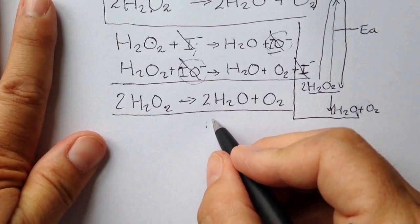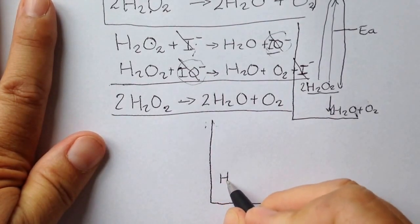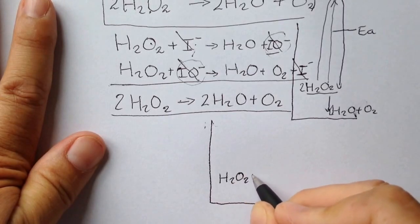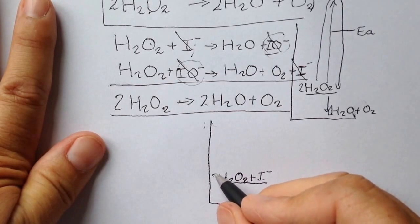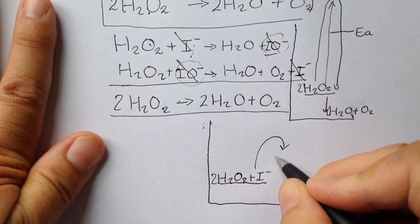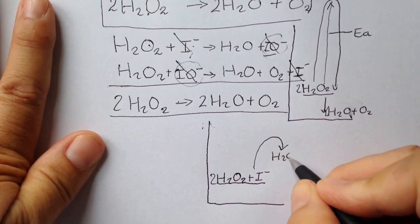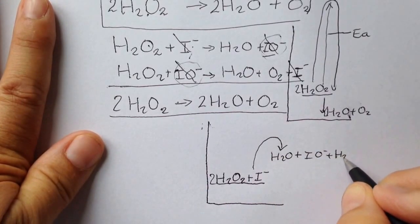So if we now draw our enthalpy profile again, this time with the catalyst, the hydrogen peroxide reacts with the iodide ions, but only one of them, to produce our intermediate which was H2O and IO minus, and one of the peroxides still remains unchanged.